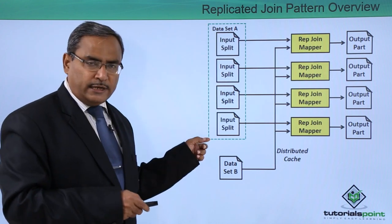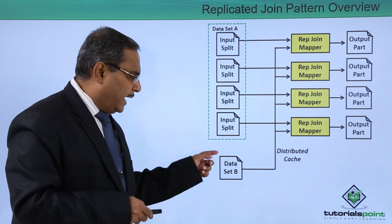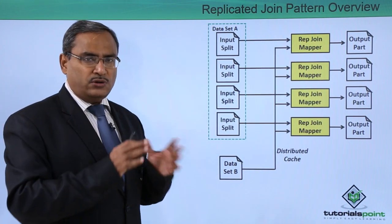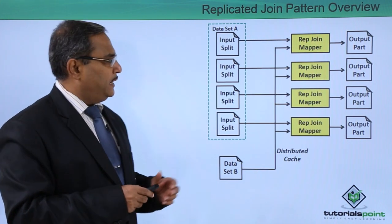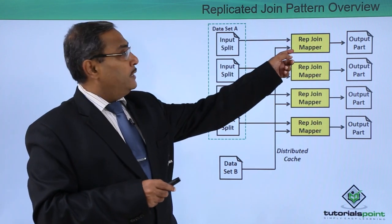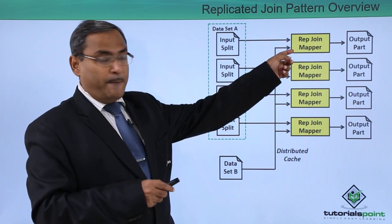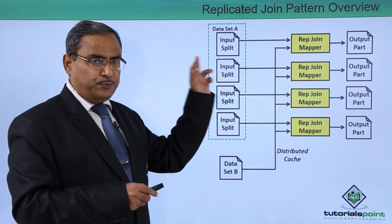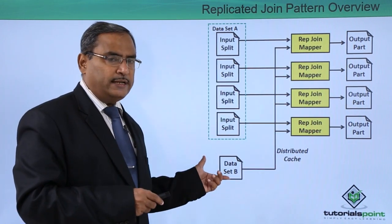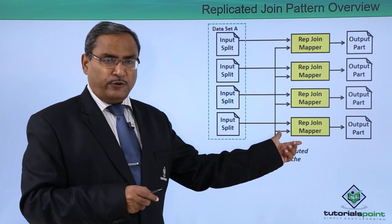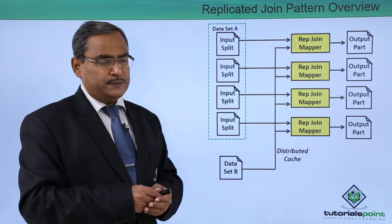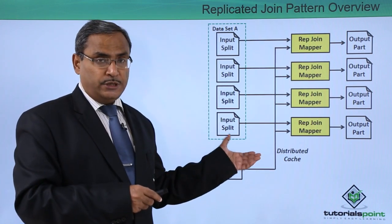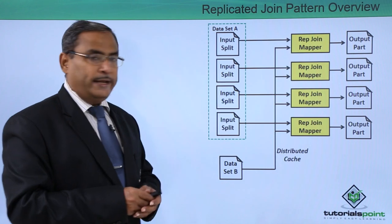Here we have a large data set — data set A — and a smaller data set — data set B. Since data set A is large enough, it has been split into multiple input splits. The replicated joint mappers take inputs from these input splits and the smaller data set B, going for the join operation accordingly, and produce the respective output parts. There is no reducer — the joining takes place only at the mapper.